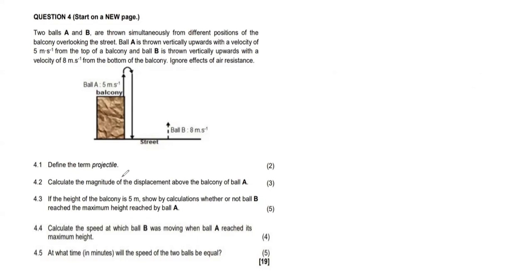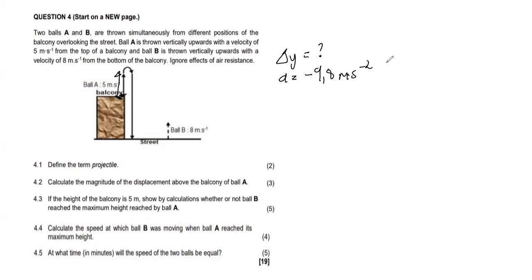Question 4.2 says calculate the magnitude of the displacement above the balcony of ball A. They said above the balcony — not above the ground or above the street. So the displacement we are looking for is from the top of the balcony to the maximum height. Taking upward as positive, our acceleration is negative 9.8 meters per second squared, and our initial velocity VI is positive 5 meters per second.